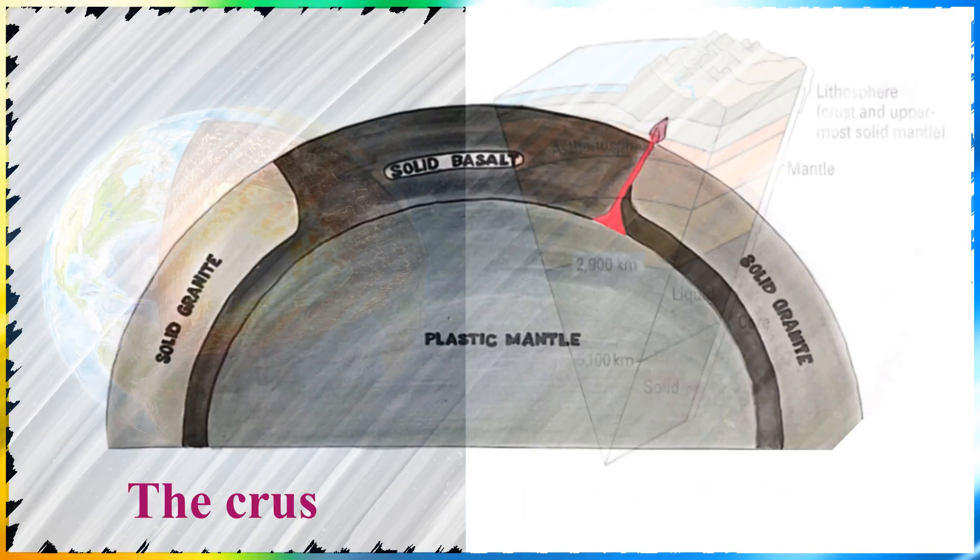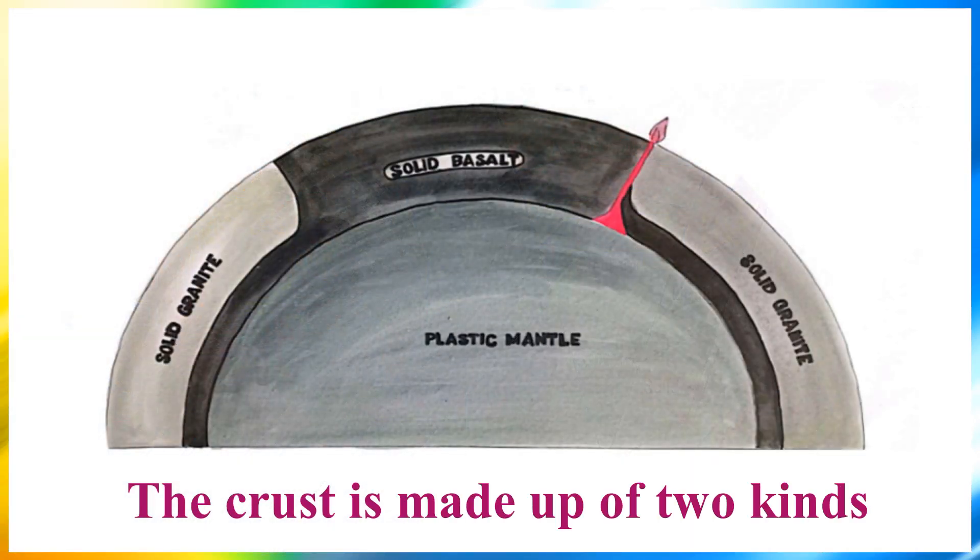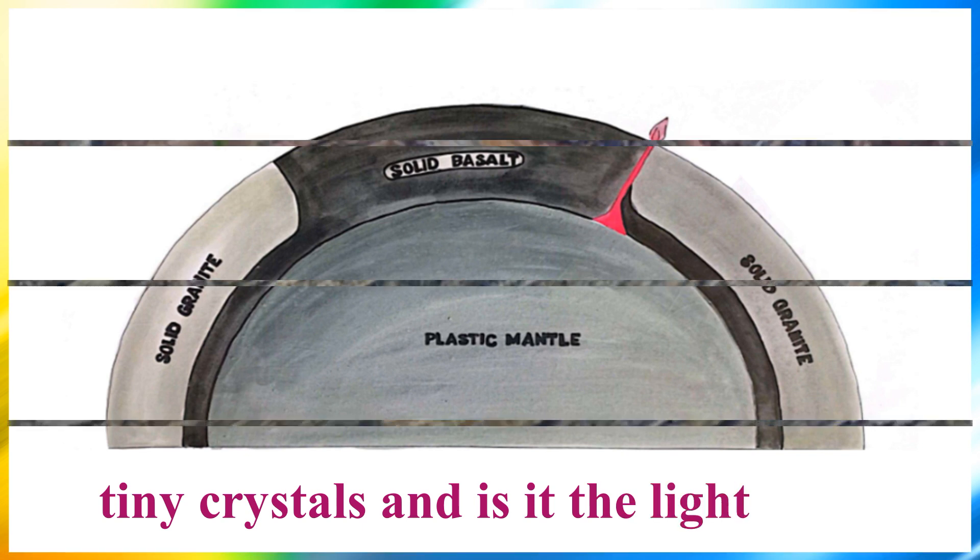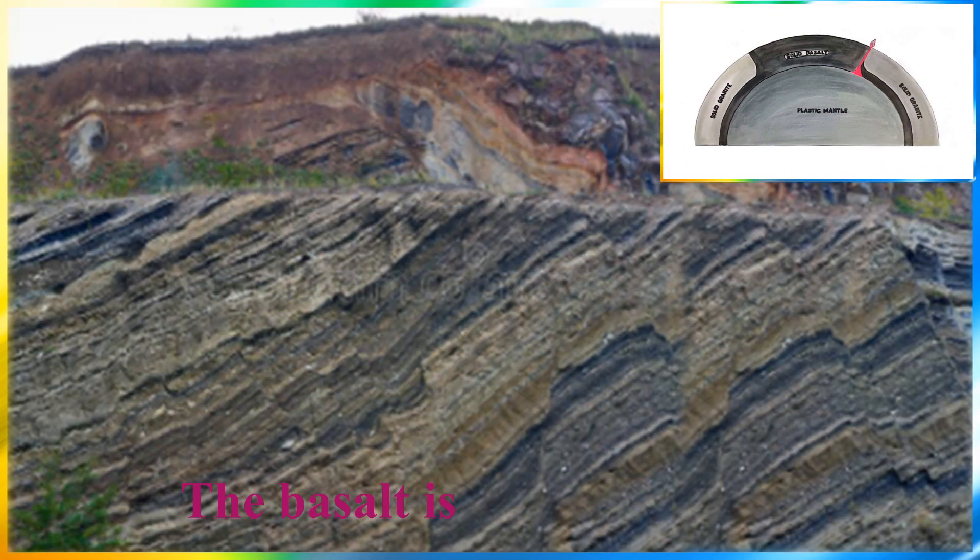The crust is made up of two kinds of rocks, granite and basalt. The granite is composed of tiny crystals, and it is the lighter one. The basalt is the heavier one.